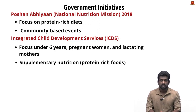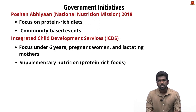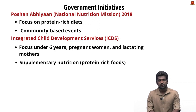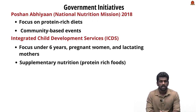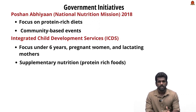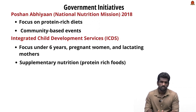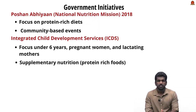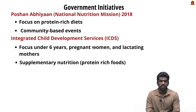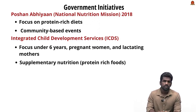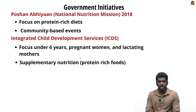Protein energy malnutrition can lead to diseases like kwashiorkor and marasmus, especially in children. Regarding government initiatives, POSHAN Abhiyaan was launched in 2018 and aims to reduce malnutrition including protein deficiency among children. It also covers adolescent girls, pregnant women, and lactating mothers, focusing on protein-rich diets through local food sources like eggs, pulses, and milk, along with community-based events to monitor nutrition status.